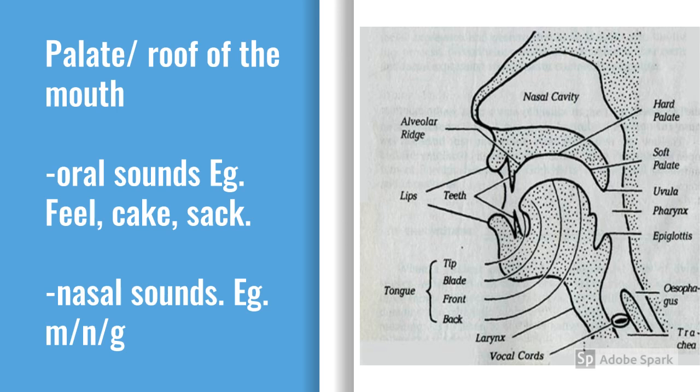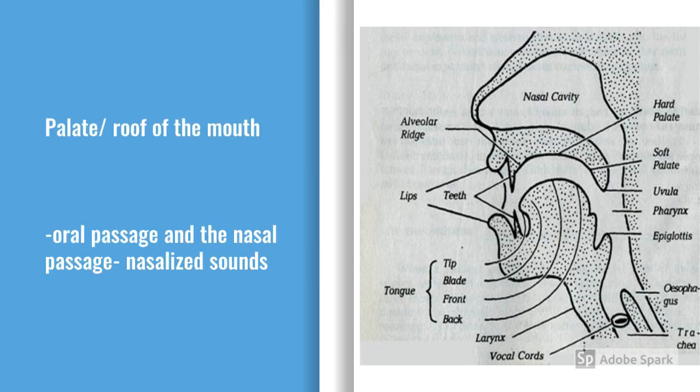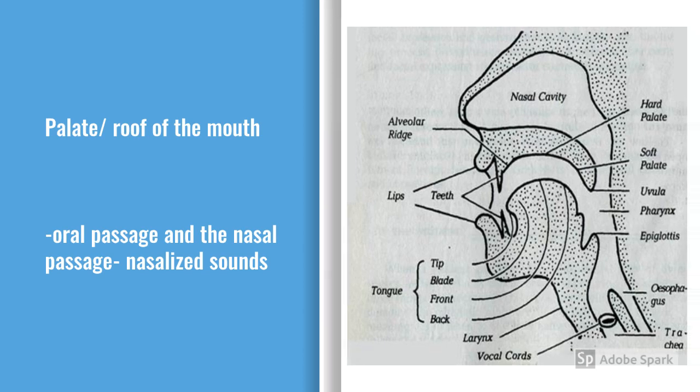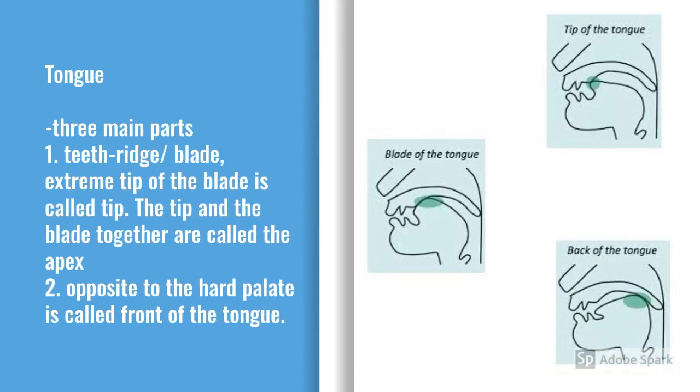Sounds produced when air escapes through the nose are called nasal sounds, as in 'mat', 'nap', and 'king'. This is also the position for humming. When air passes through both the oral and nasal passages, nasalized sounds are produced — for example, the Hindi word 'ank'.